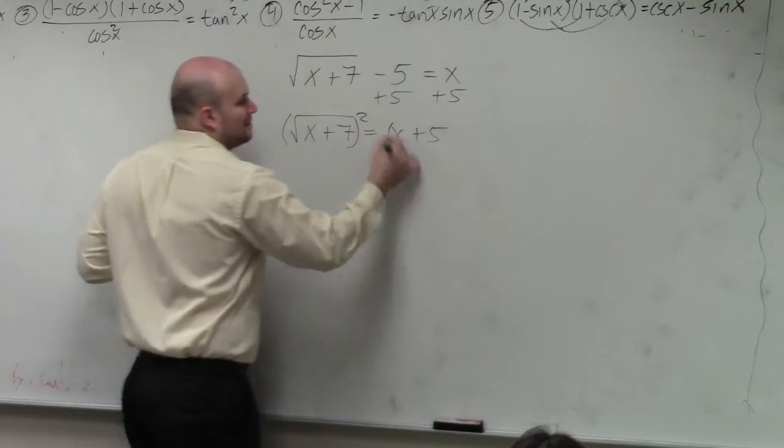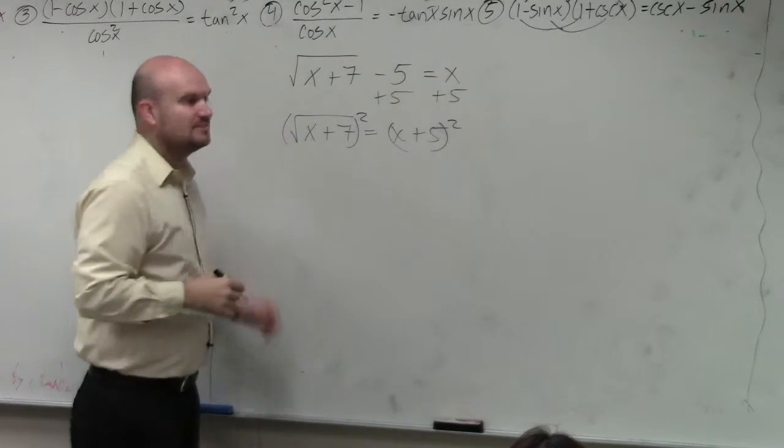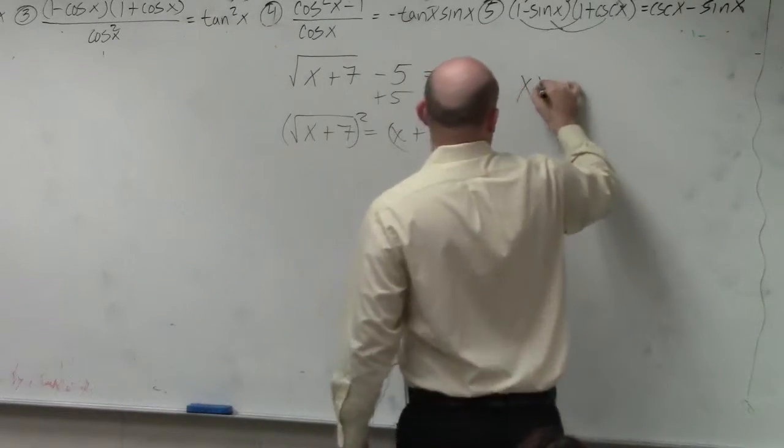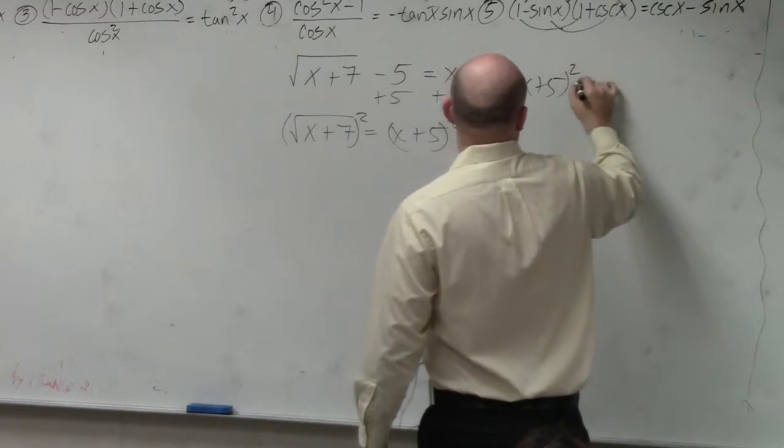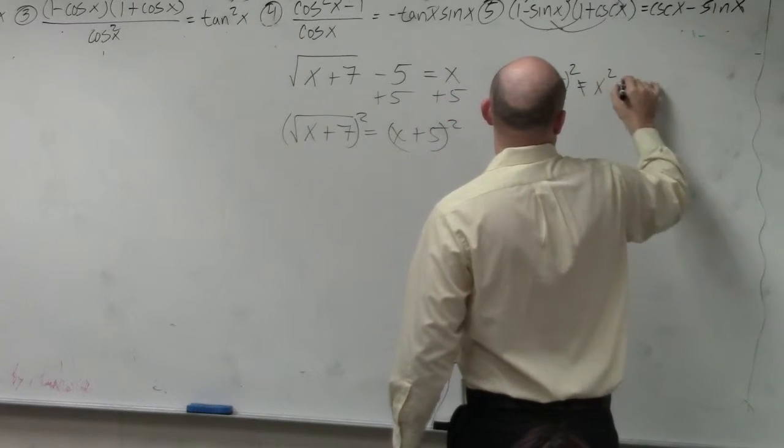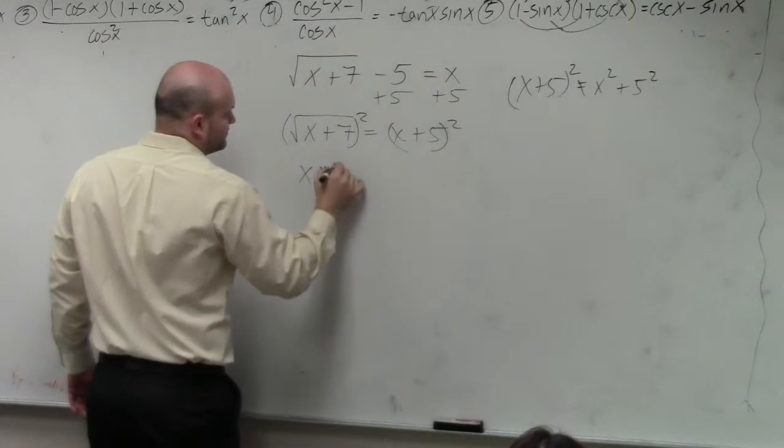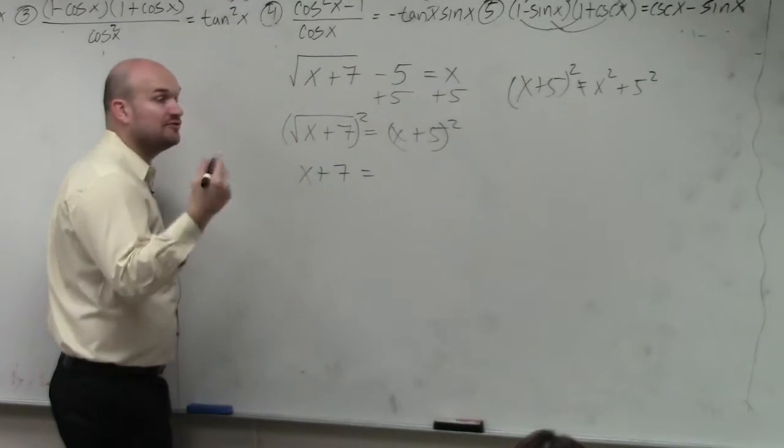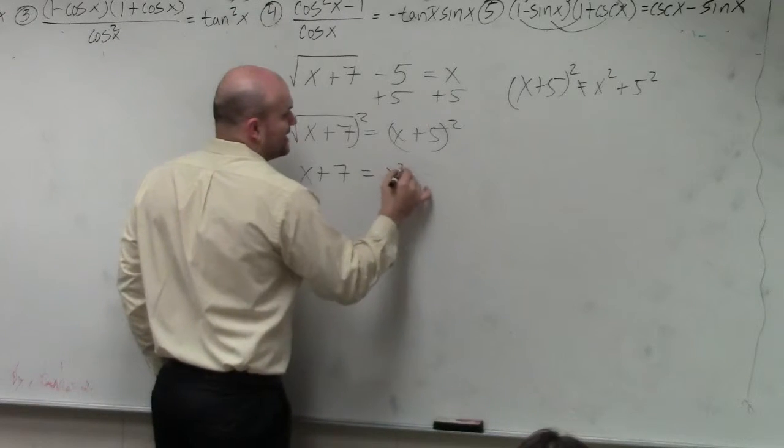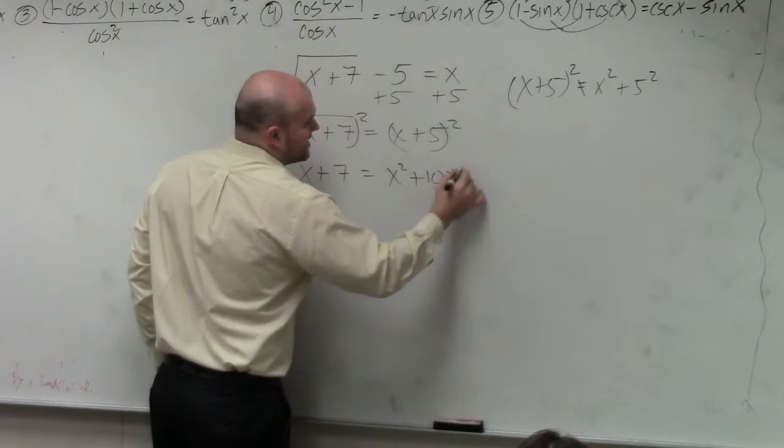Square it. Square it, right? And just a reminder, my biggest pet peeve ever, x plus 5 squared is not x squared plus 5 squared. What do you have to do? Foil. So therefore, I'm going to do foil on my head, because I'm a little short on time. So that's x squared plus 10x plus 25.